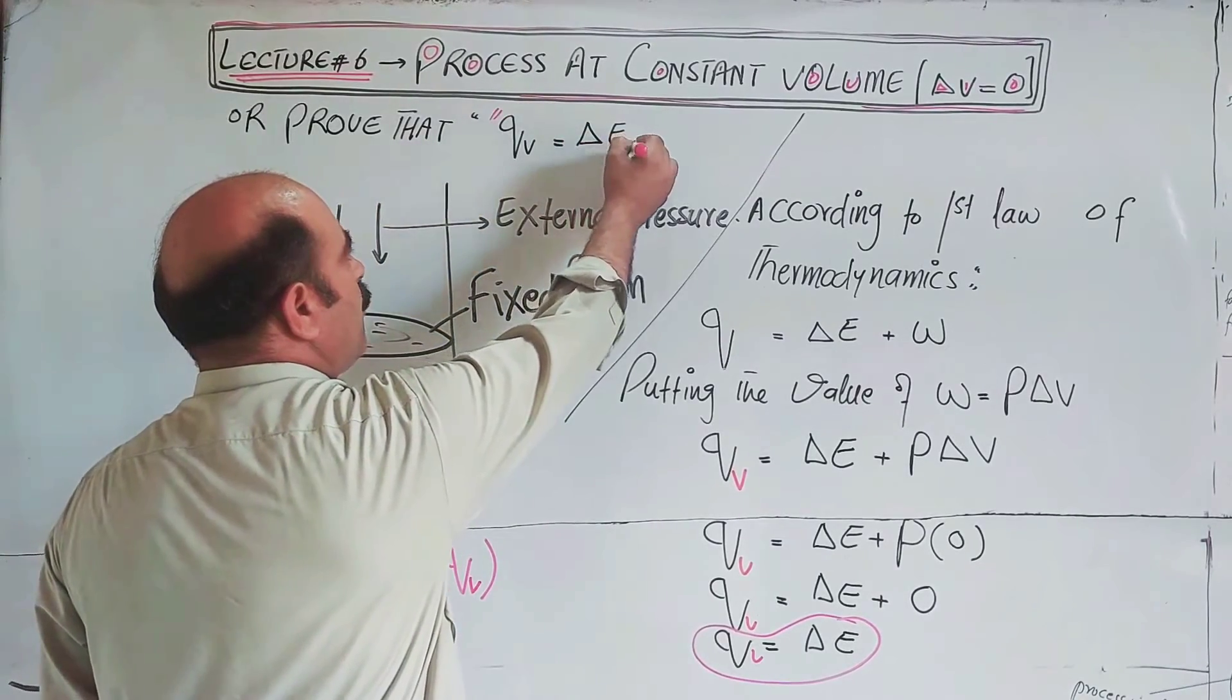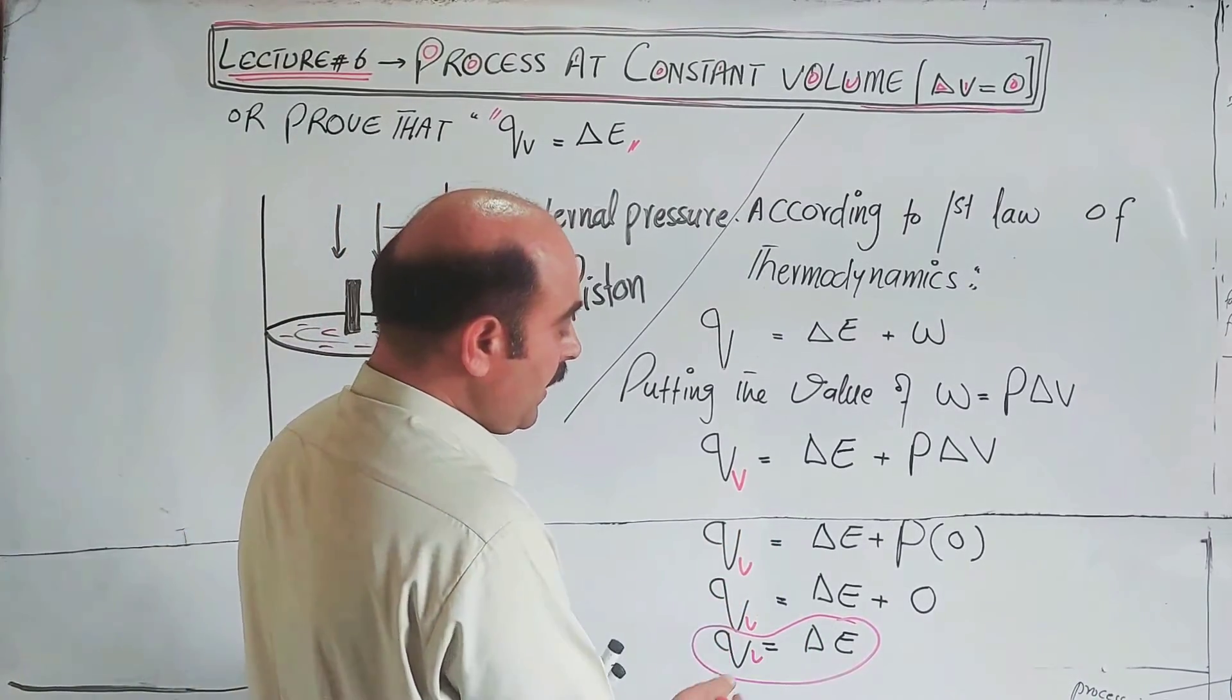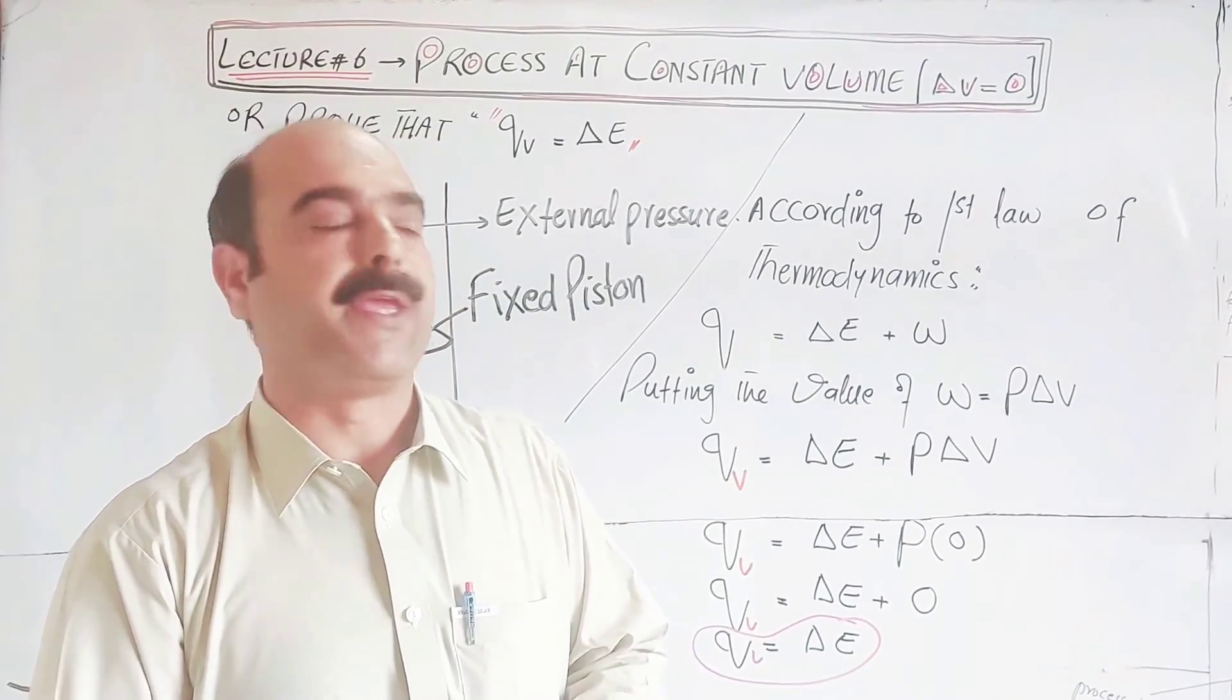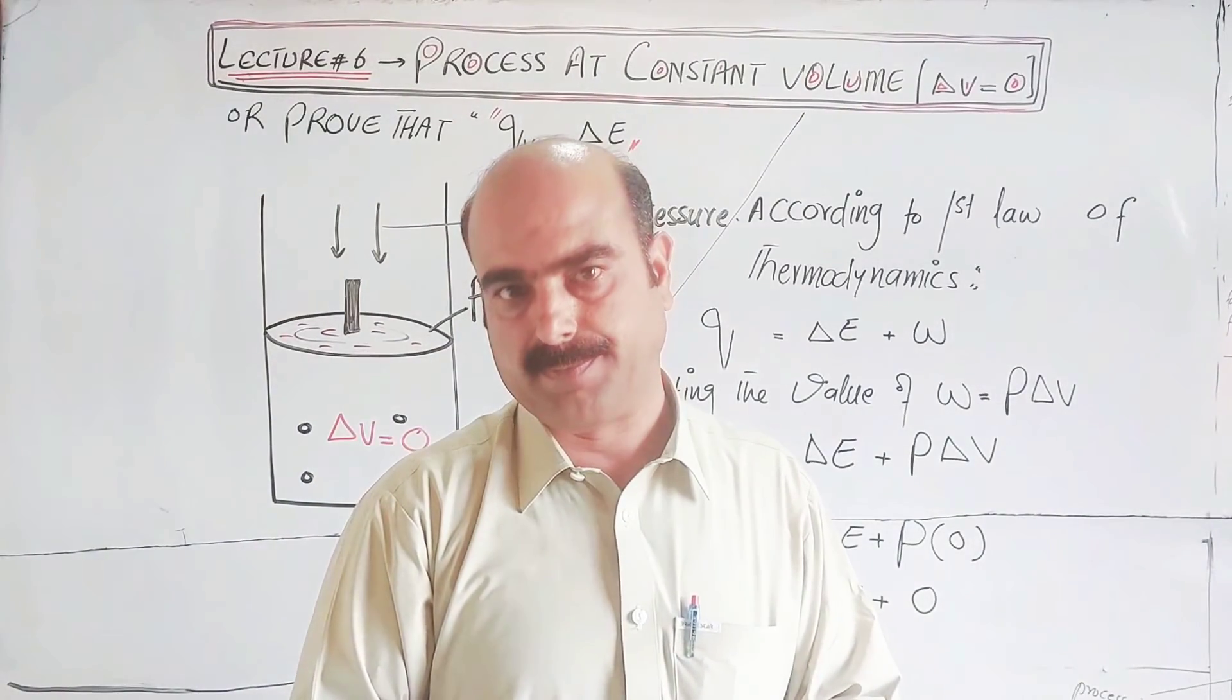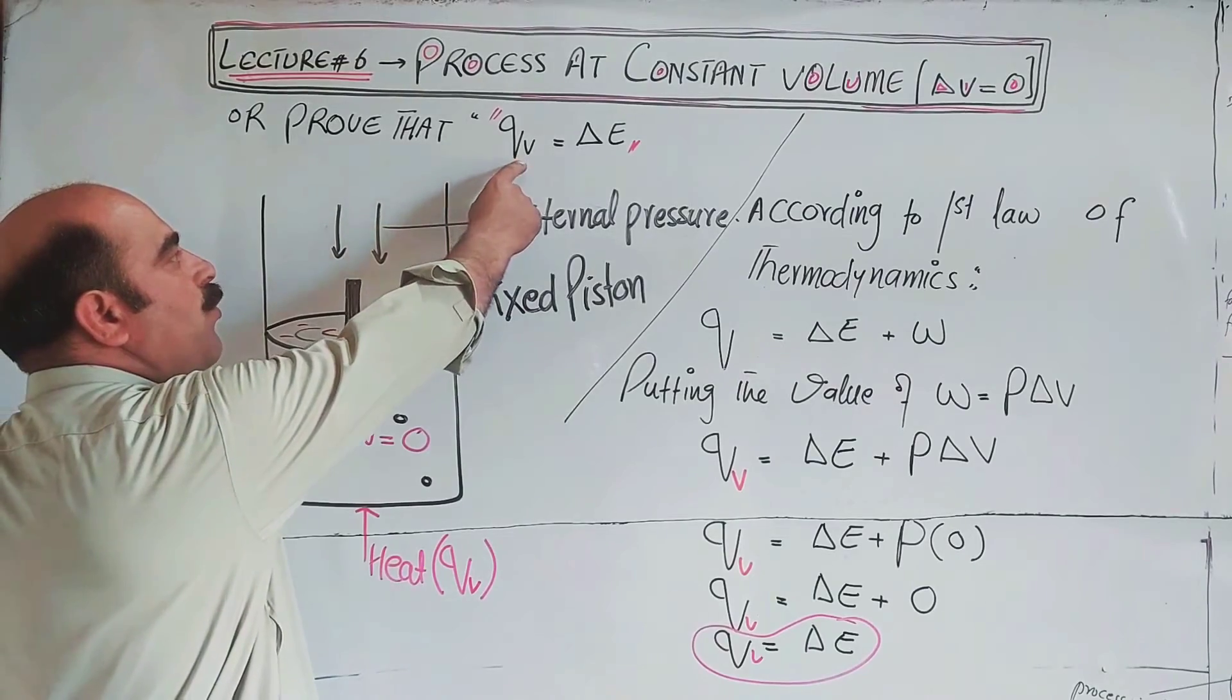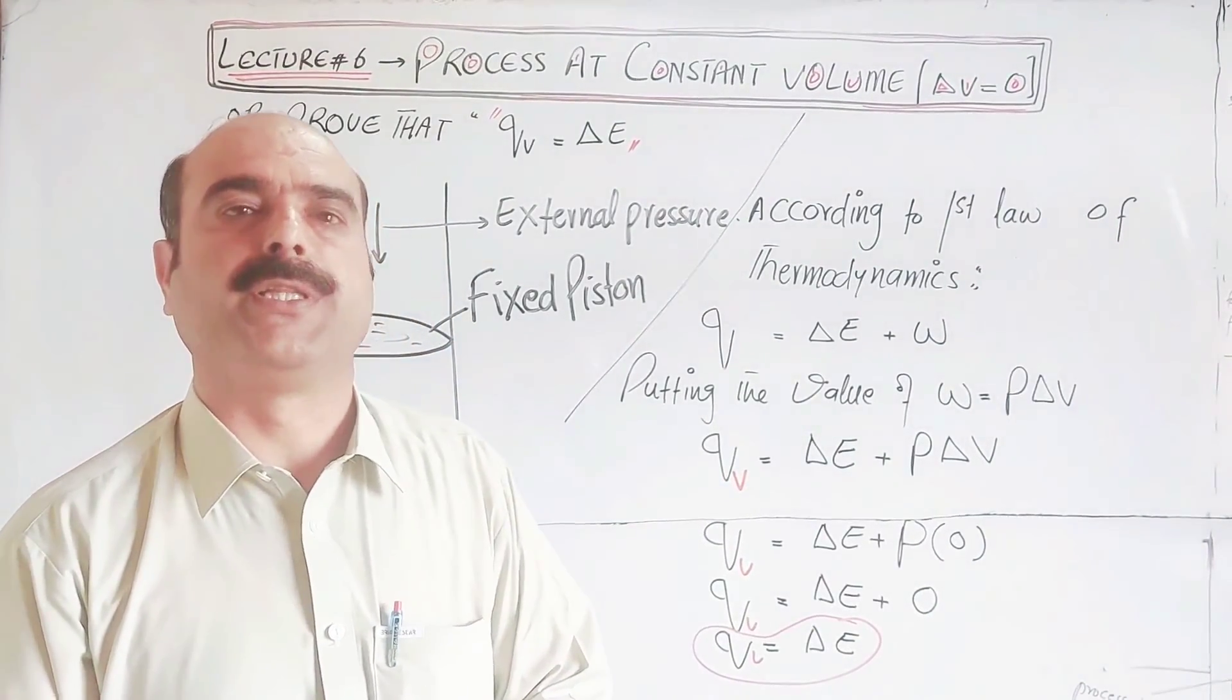This proves that heat supplied at constant volume will only change or increase the internal energy of the system. This is the proof of Qv equals delta E. We covered the diagrammatic representation and the mathematical proof. Thanks a lot for watching this video.